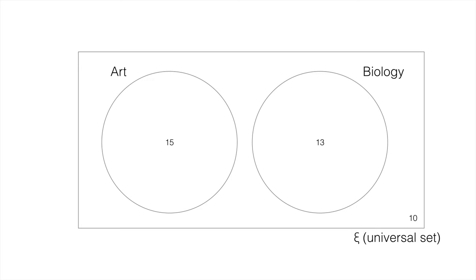Let's say we have these two sets, which are depicted as circles in this diagram. There is a square around them, and the square around them represents all the elements that are not in either of these sets. So let me explain. Let's say we have 15 students doing art, and 13 doing biology, and then 10 that are doing neither. Those 10 are all those students that are not in those two sets, or any other set that could be within the universal set, which is the square.